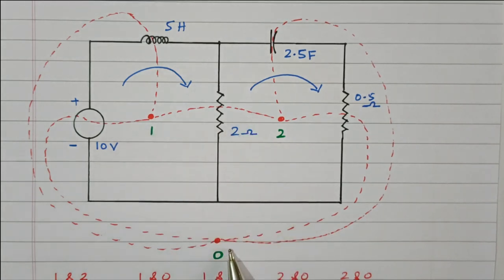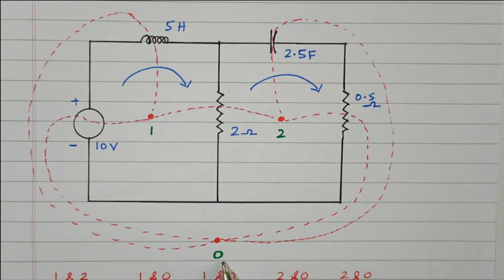One dot is placed outside the network, numbered as 0. That is called the reference node.